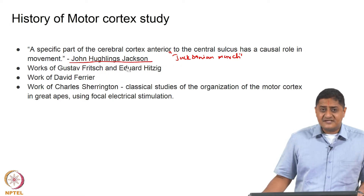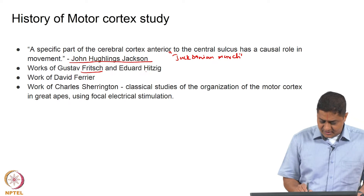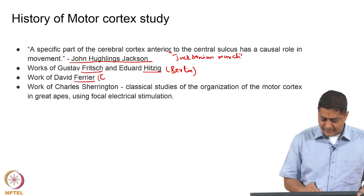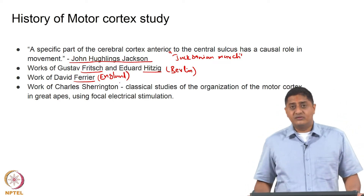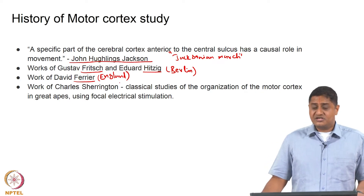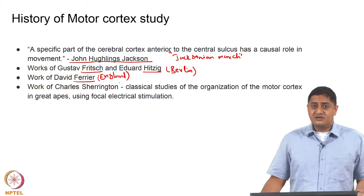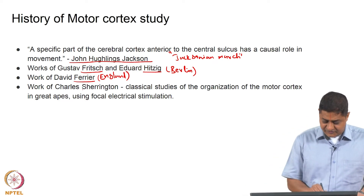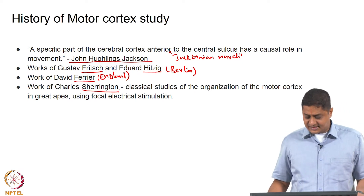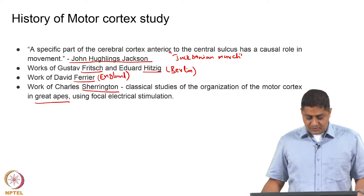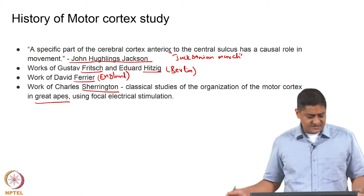Around the same time, Fritsch and Hitzig in Berlin and Hughlings Jackson's friend and colleague Dr. Ferrier in England studied the functional organization of motor regions in animals, particularly dogs. They found that stimulation of specific regions of the cortex produced movements in specific regions of the body. Then came the famous neurophysiologist Sherrington, who performed classical studies on the organization of motor cortex in great apes using electrical stimulation, followed by the work of Clinton Woolsey, which we will discuss in future slides.